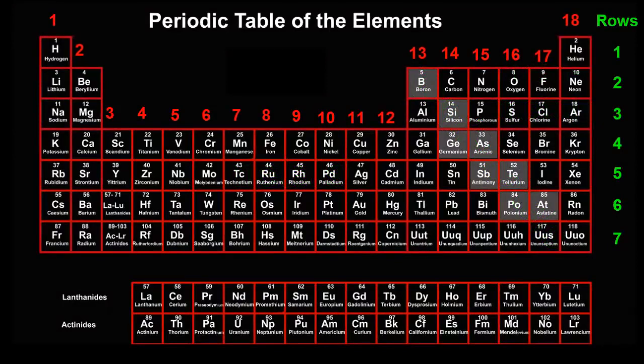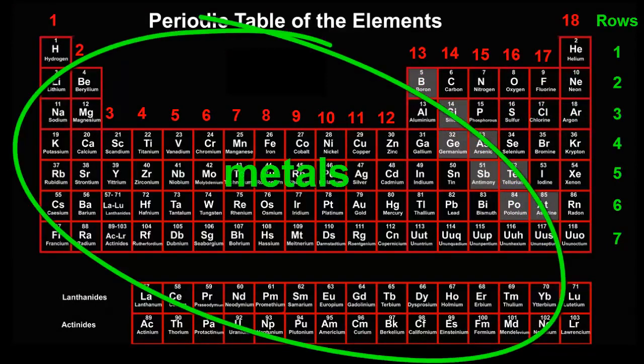Are there more metal or non-metal elements? Metals! Nearly three-quarters of the elements on the periodic table are metals.